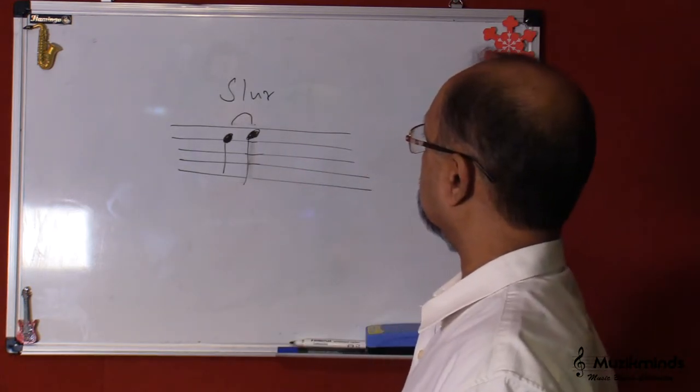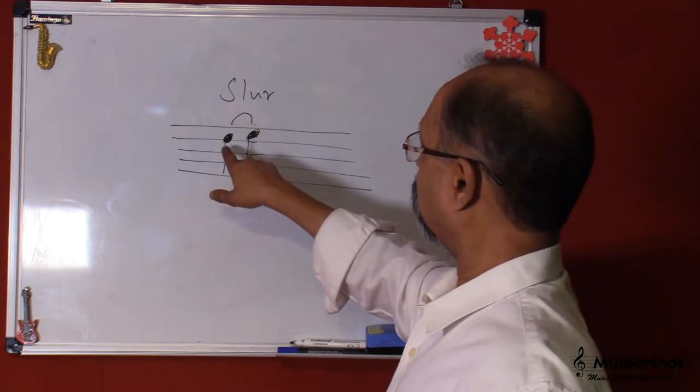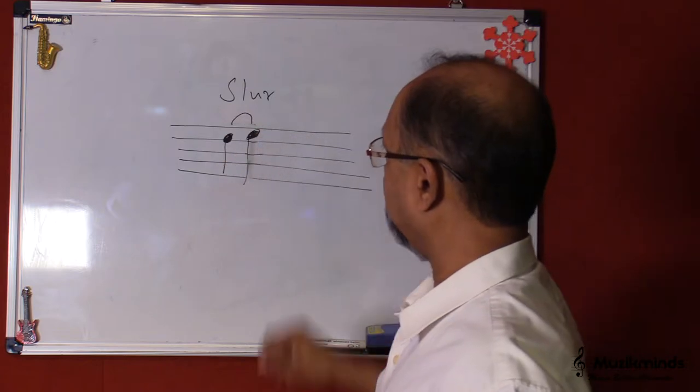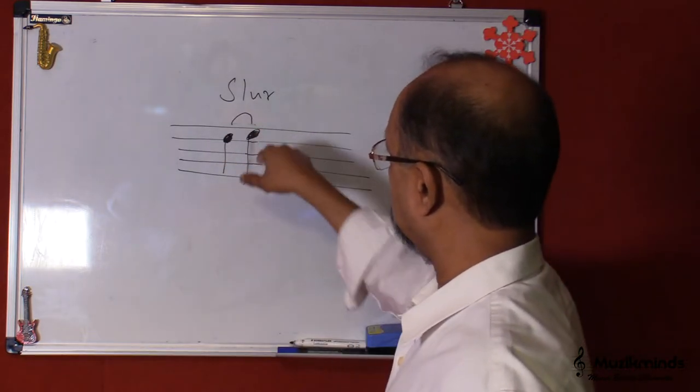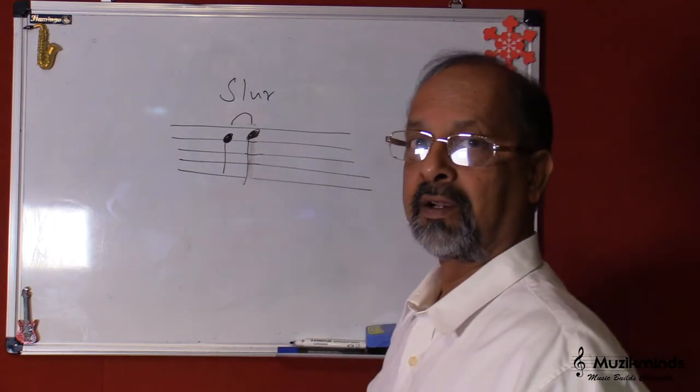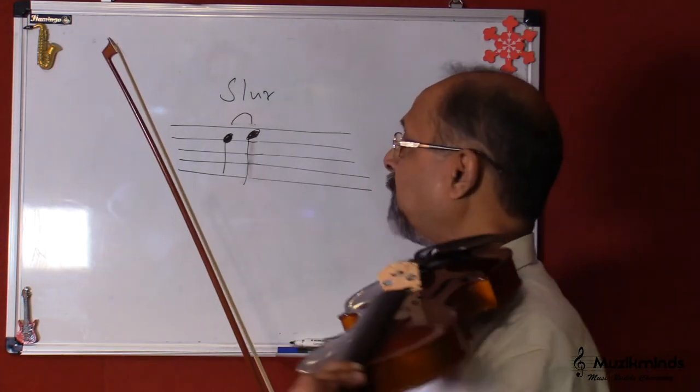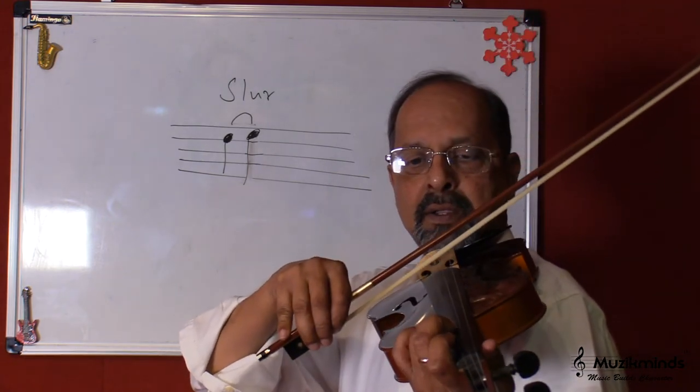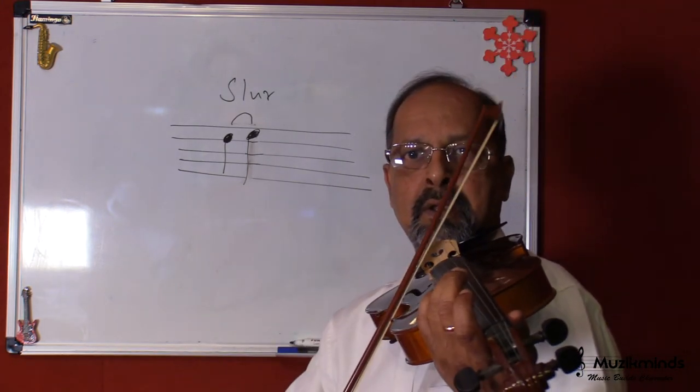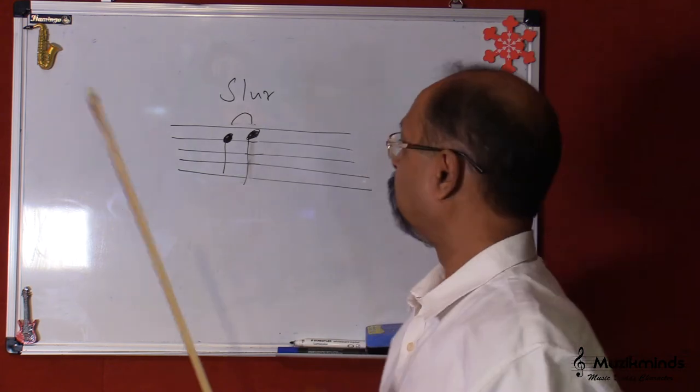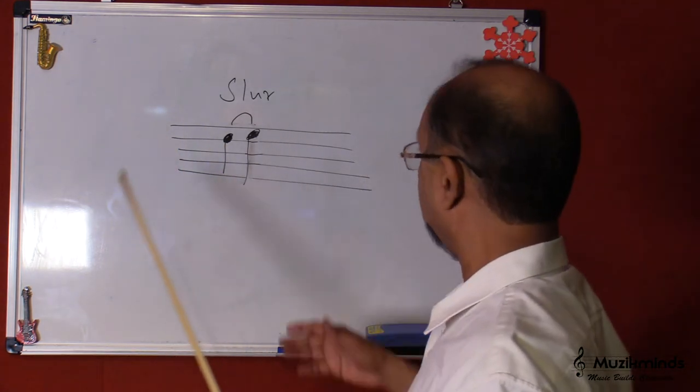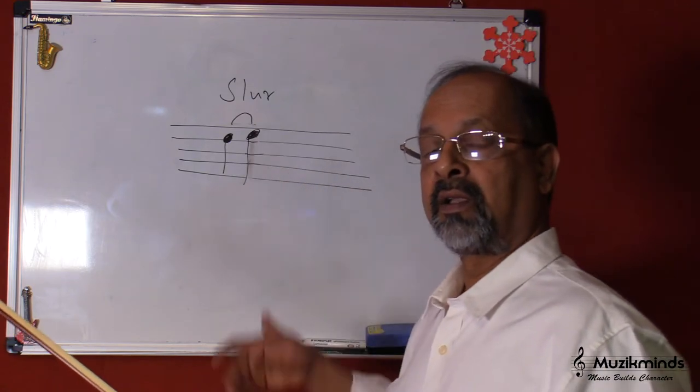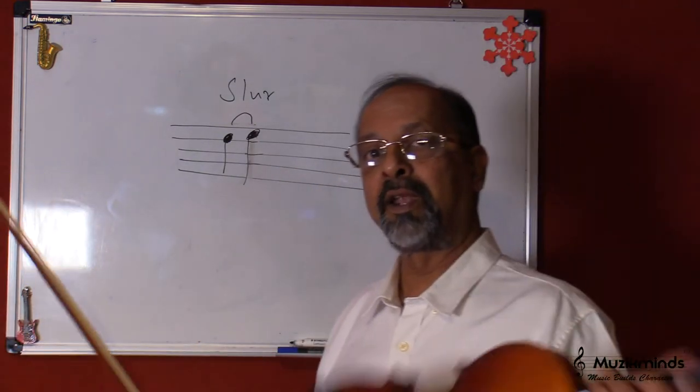The next one is a slur. Now there are two notes of two different pitches, there's a D here and there's an E. Now this again is joined together in a curve. This is called a slur. Now how do we play this? This is played on one bow. So if I've got to play this together, it's two notes played together. So that's two notes are played together. Now we could have two or more notes played together, which is called a slur. It's played on one bow.